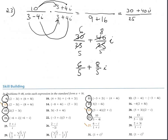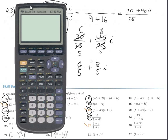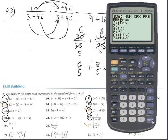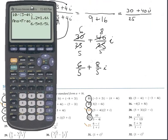Let's verify with the calculator: enter 10 divided by, then parenthesis (3 minus 4i), press enter. The answer appears as a decimal. Convert to a fraction by pressing Math, then Enter twice. The answer is 6 over 5 plus 8 over 5 i. Correct!